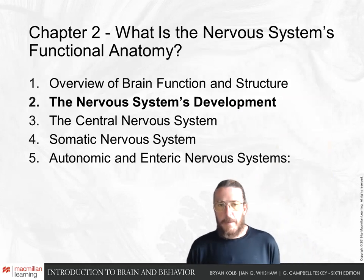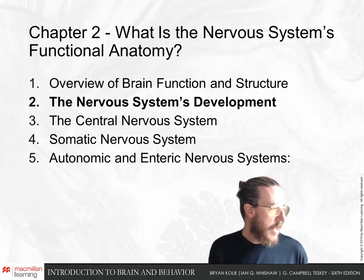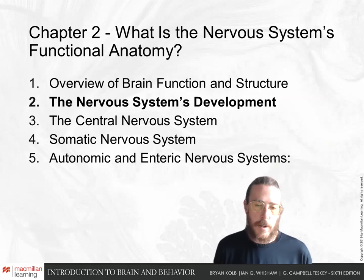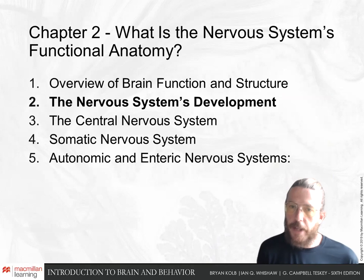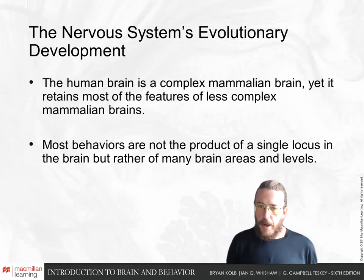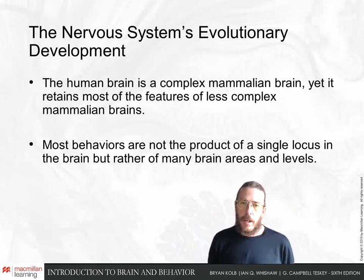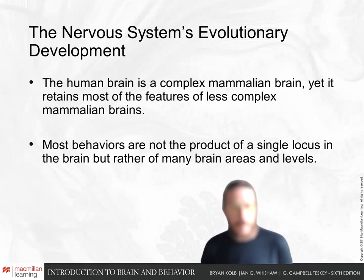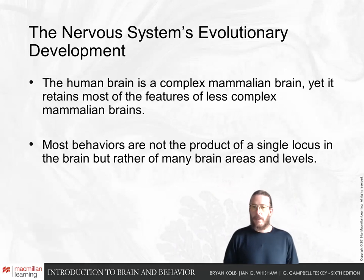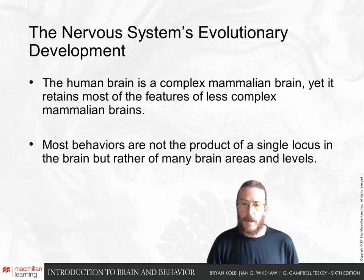Next we'll talk about the development of the nervous system, starting in the embryo all the way up to the full human brain, and how these relate to other brains in the animal kingdom. Our human brain has retained many features of less complex mammalian and other animal brains. Most of the behaviors we produce are a layering of more complex brain regions on top of more basic, simpler regions from our evolutionary past.